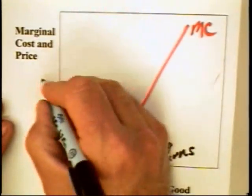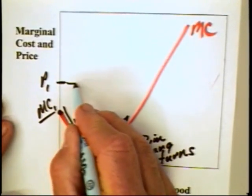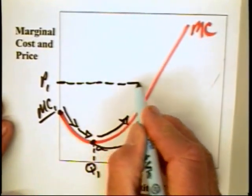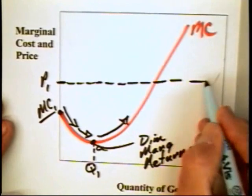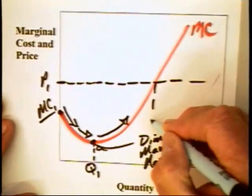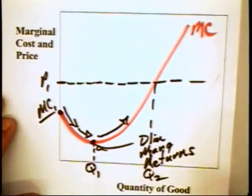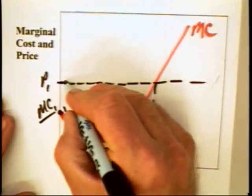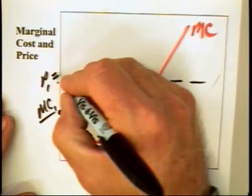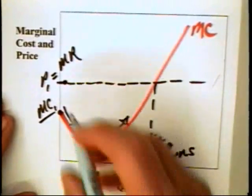Well, we can then begin to take a price equal to P1. If the price is P1 and the firm can sell as much as it wants to at a price of P1, then that firm is going to optimize or maximize production at a quantity of Q2. The reason is that the price is now equal to marginal revenue or the additional revenue.